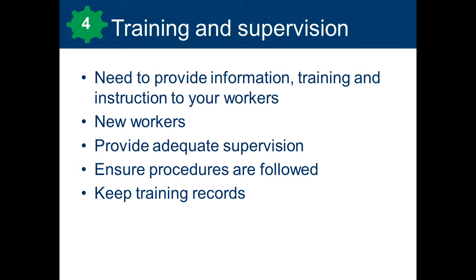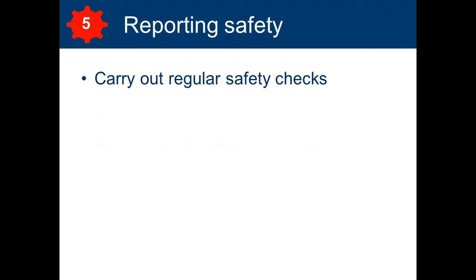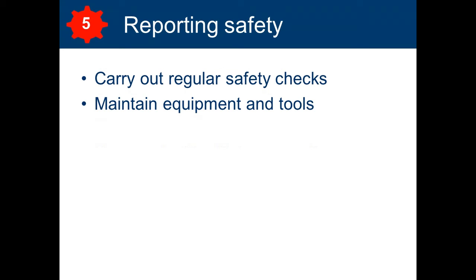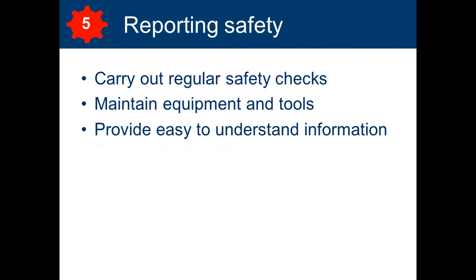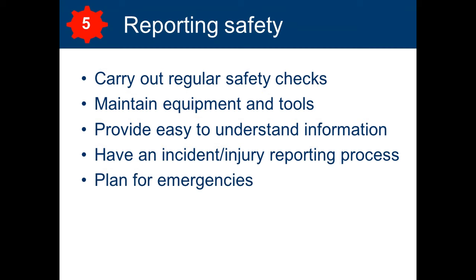The next element is reporting safety. A simple reporting procedure will help you to obtain information about health and safety issues in the workplace and identify problems when they arise. You also need to plan and schedule regular inspections and maintenance of your equipment and tools, including the safe storage of chemicals and equipment. You need to provide easy-to-understand information and keep your workers informed of any changes. All workplaces need to have an incident or injury notification system in place, with everyone familiar with the procedures. Workers are required to ensure that any injuries or dangerous occurrences are recorded, including near misses. It's also important that you plan for emergencies so everyone knows what to do if an emergency occurs.